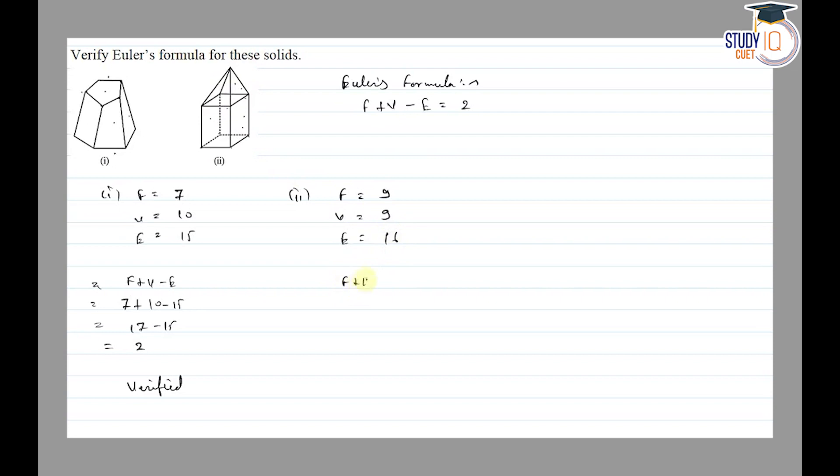Then F plus V minus E, we will find out. So 9 plus 9 minus 16 is equal to 18 minus 16 is equal to 2. So it's also verified.